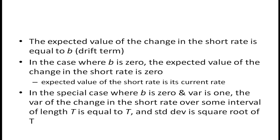The expected value of the change in the short rate equals the drift term — since the expected value of z is zero, we're left with b. In the case where b equals zero, the expected value of the change in the short rate is zero, meaning the expected value of the short rate is its current rate. In the special case where b equals zero and variance equals one, the variance of the change in the short rate over interval t equals t, so the standard deviation is the square root of t.